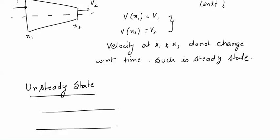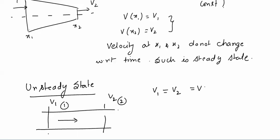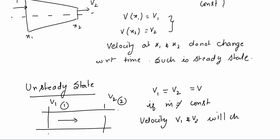In case of unsteady state, consider a tube where velocity is v₁ throughout since it has a constant cross-section. If ṁ is not equal to constant, then velocities v₁ and v₂ will change with time. This is unsteady state.